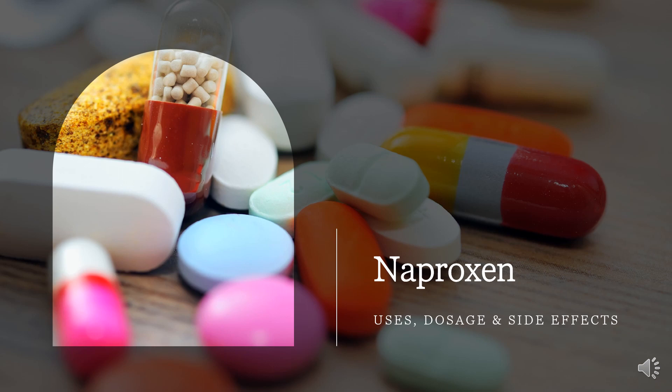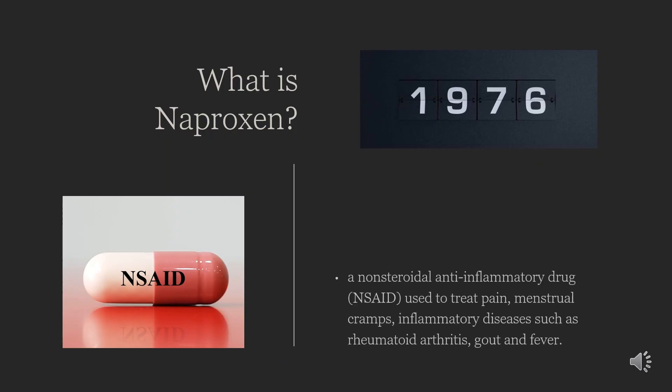Naproxen is a non-steroidal anti-inflammatory drug (NSAID) that works by reducing hormones that cause inflammation and pain in the body. In this video, let's find out what naproxen is, what it is used for, its contraindications, side effects, how it works, and how to use it.